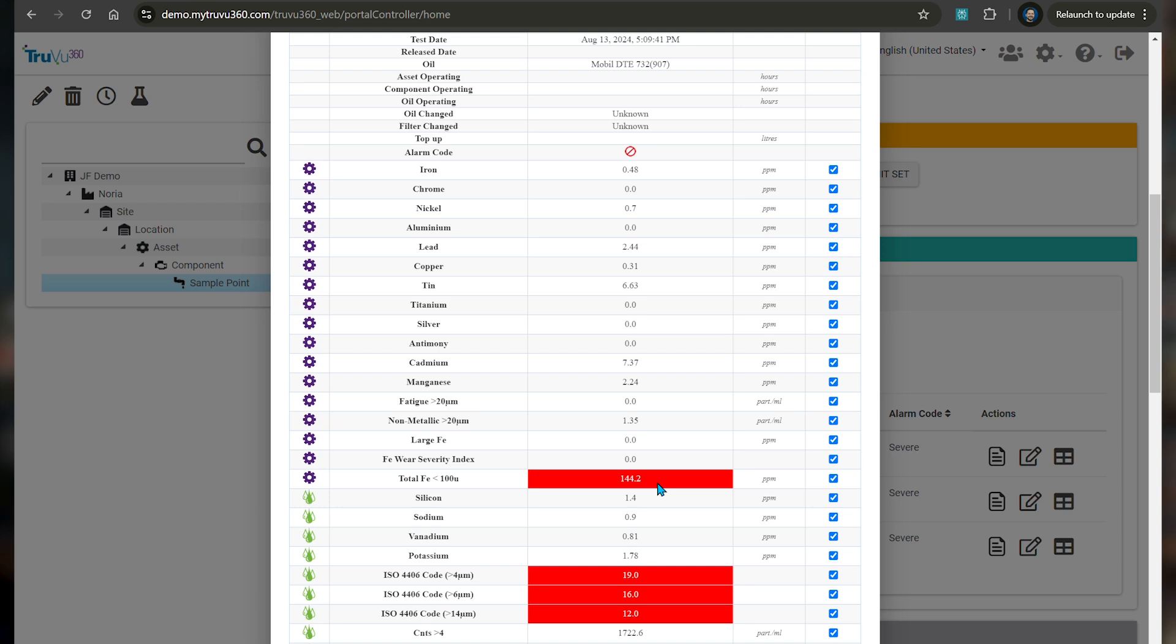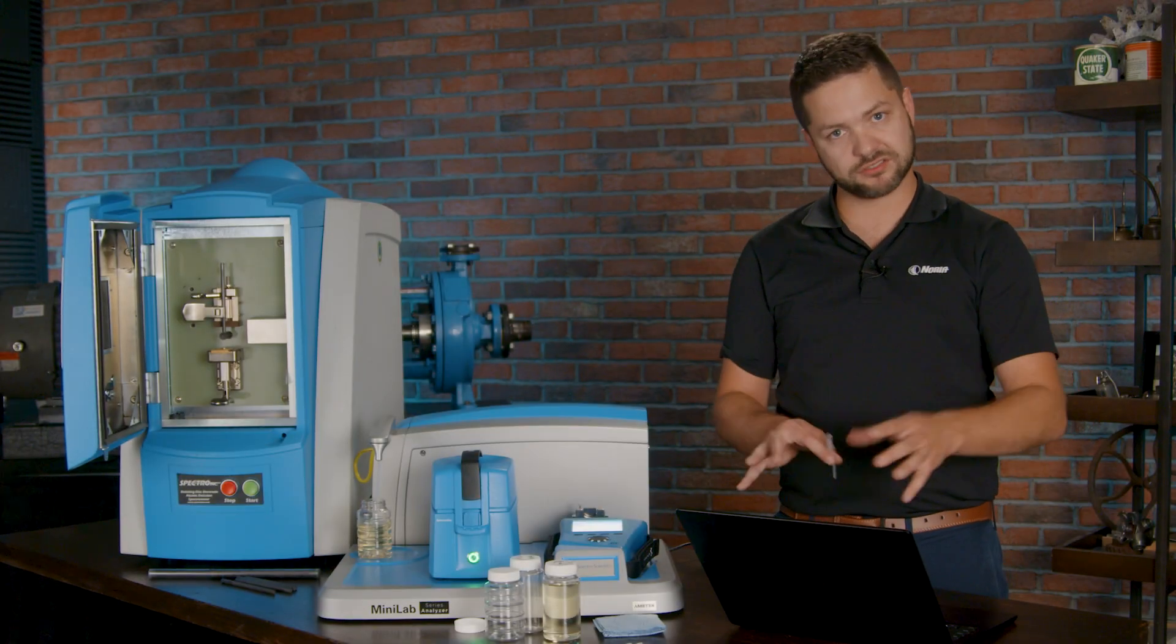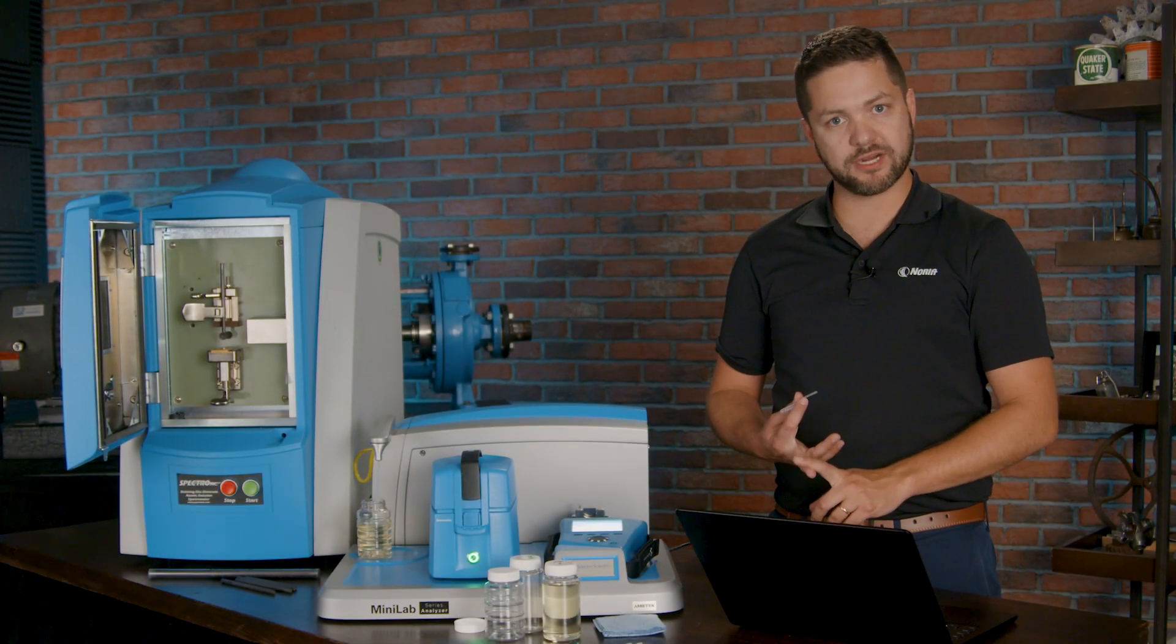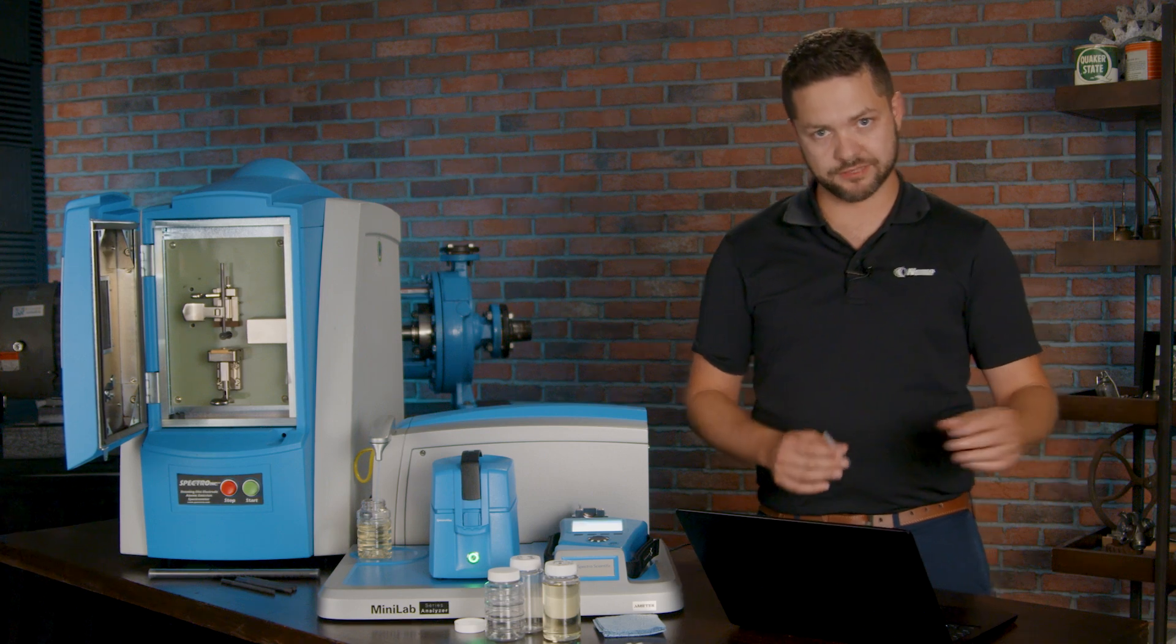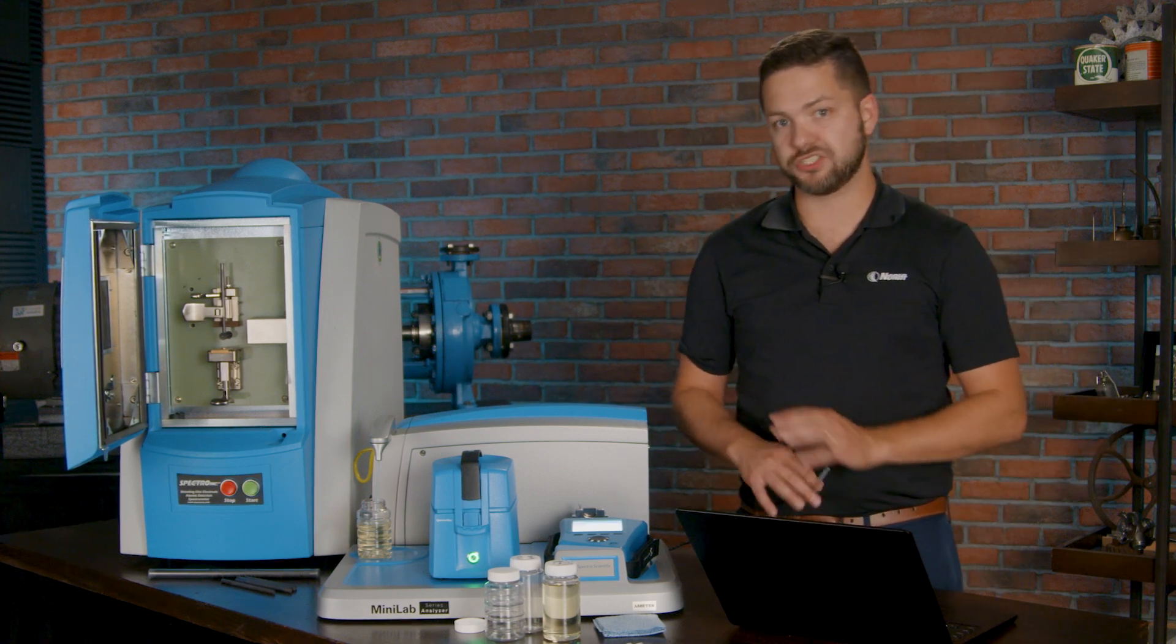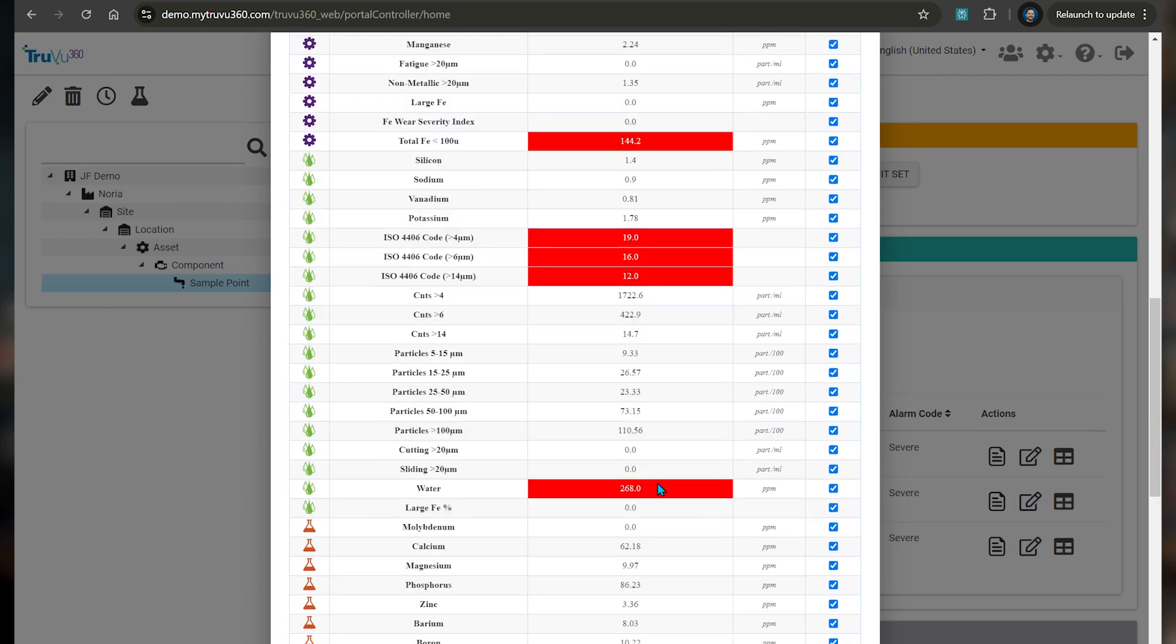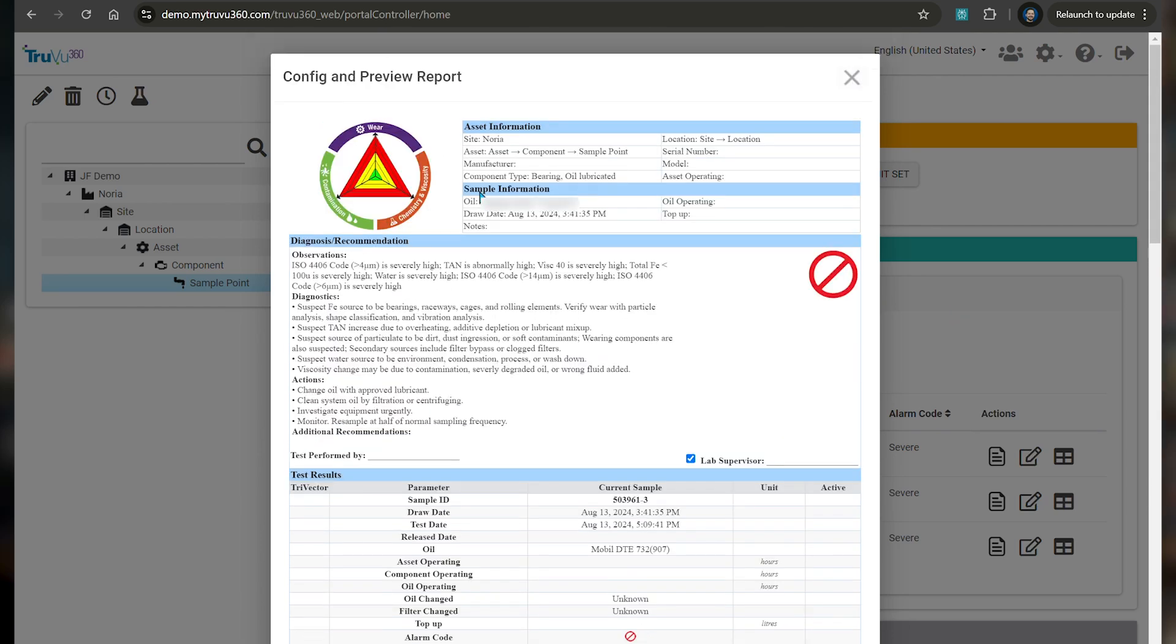You can see things are already showing up in red. So that's based on the limits that already were established. Those are all currently set up in the software already based on the OEM recommendations and following ASTM procedures. But all that's customizable. So you can go in and make some changes whenever you'd like. But they have it organized based on the three categories of oil analysis: contamination, the chemistry with fluid properties, and wear debris. So that's all set up there on this oil analysis report.